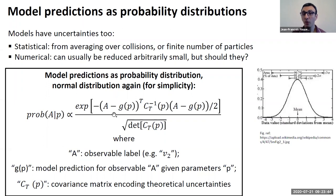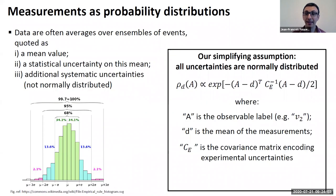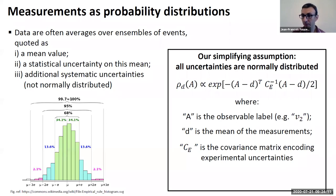If you have a multi-valued output — which is the case for almost every model, where you have v2 for different species — these become vectors, and the covariance becomes a matrix. This matrix can encode, both in the theory case and in the experimental case, non-trivial correlations between the uncertainties of your observables.